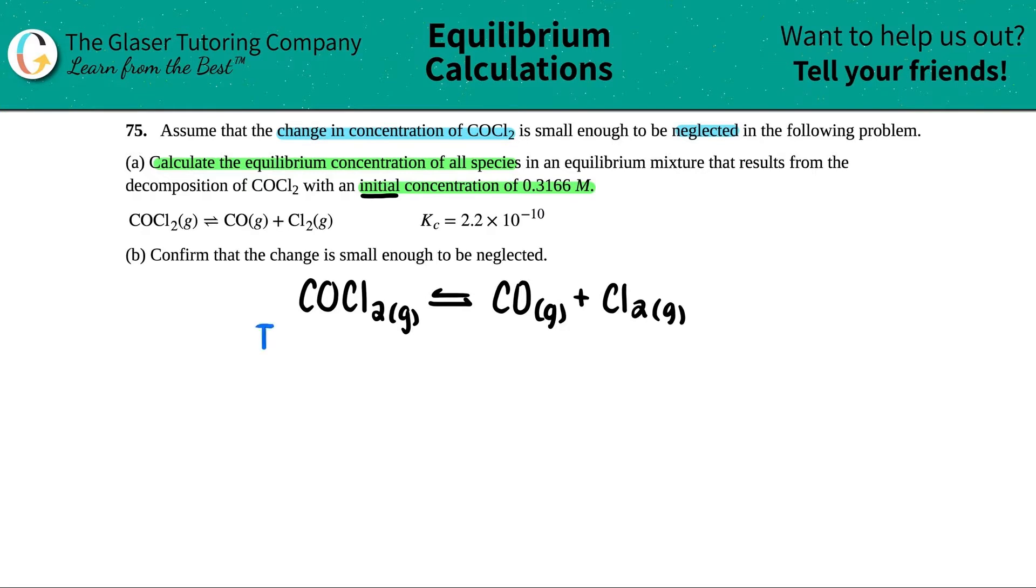So I like to just write I-C-E. Some teachers teach it as the RICE table. The R stands for the reaction, but we don't really need the R. We just write the balanced equation and then we put I-C-E. Start with the I. I stands for initial. All of your initial concentrations. Remember, technically, only concentration or pressure values, ATM, should be in here. So we're only looking for molarity. But they gave me an initial concentration. So we're good to go.